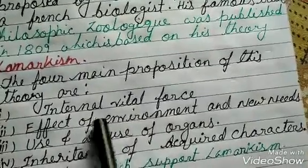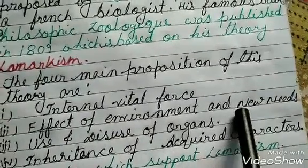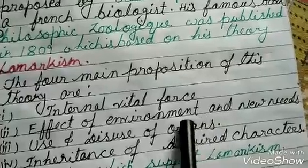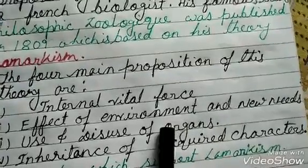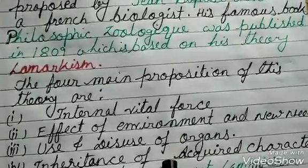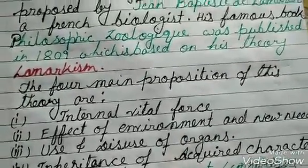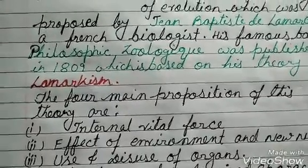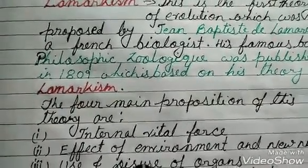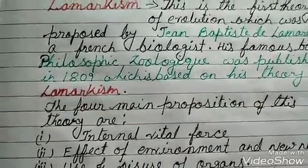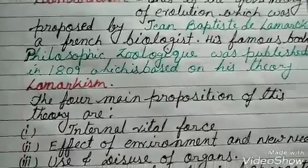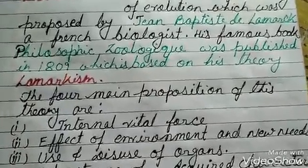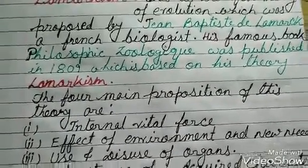The next is effect of environment and new needs. It means environment influences all types of organisms. A change in environment brings about change in organisms, giving rise to new needs or desires to produce new structures and changes, and changes the habit of the organism.